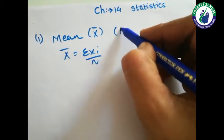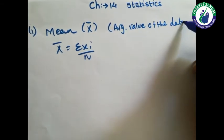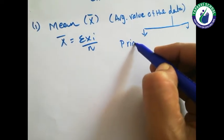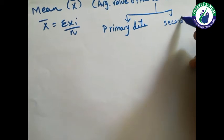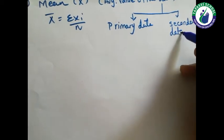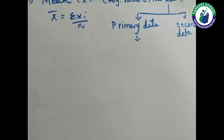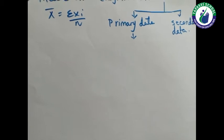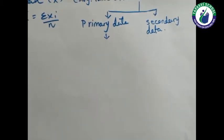Mean is nothing but the average value of the data. Data is of two types: first one is primary data, and another one is secondary data. Primary data is data which we collect through our own efforts. For example, as a teacher I am preparing an attendance register of the students — for that I will not get data from any outside source, so I have to put in my own efforts to prepare it. That type of data is known as primary data.